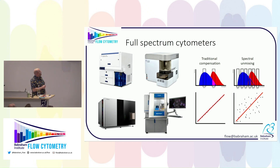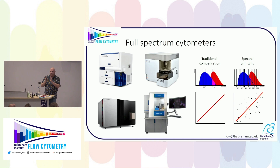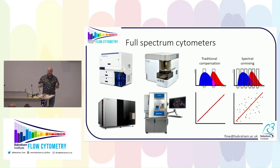We have four machines: the BD A5SE, the Aurora, the ID-7000, and the Bigfoot — these are our full spectrum machines. But none of them are really full spectrum in the way that I would think about it. They look at entire spectrums from the laser line to about 800 nanometers, but they all partition their spectra differently. Some are 40 nanometer, some are 5 nanometer bandpasses or graded PMTs. It's still spectral because of the unmixing algorithms rather than the actual instrumentation itself.